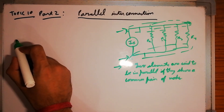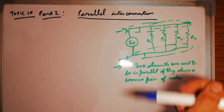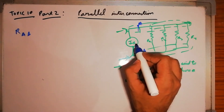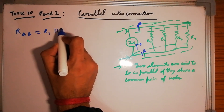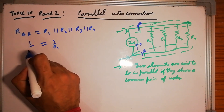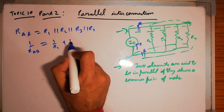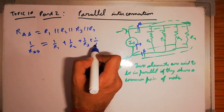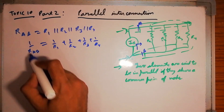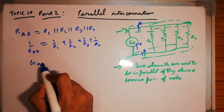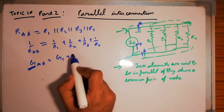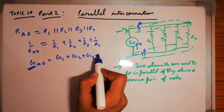We all know how to find parallel resistance. If terminals are A and B, R_ab equals R1 parallel R2 parallel R3 parallel R4. So 1/R_ab = 1/R1 + 1/R2 + 1/R3 + 1/R4. This can also be written as G_ab = G1 + G2 + G3 + G4, where conductance G is the reciprocal of resistance.